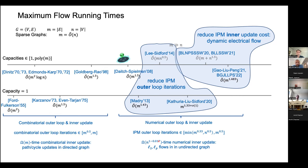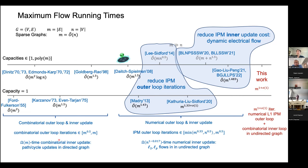So how do we finally get almost linear time? We use an almost linear number of iterations in the outer loop — more than before. The outer loop is a numerical L1 IPM (versus the L2 IPMs used previously). The inner loop is combinatorial, like the combinatorial era, but now in an undirected graph. Crucially, we give a dynamic algorithm for the inner problem that solves each inner update in almost constant time — M to the little-o of one. We take many iterations but each is extremely fast.